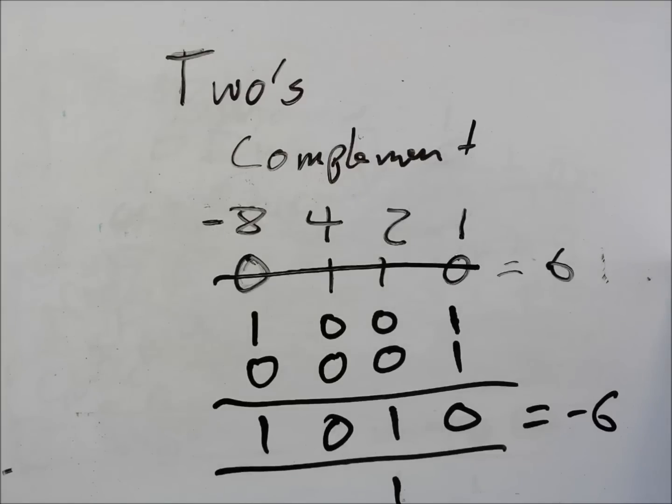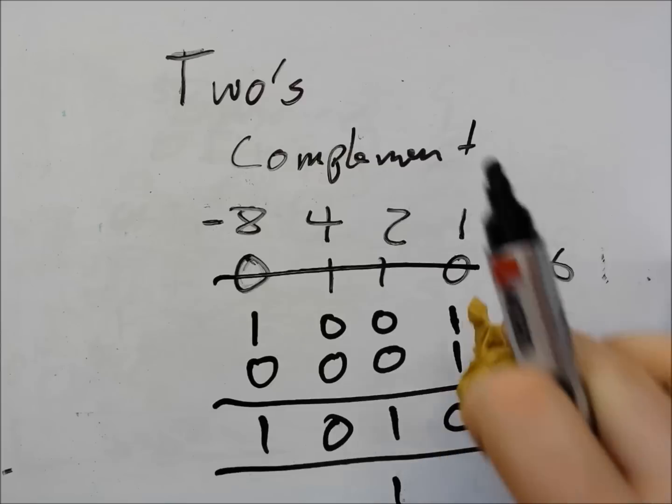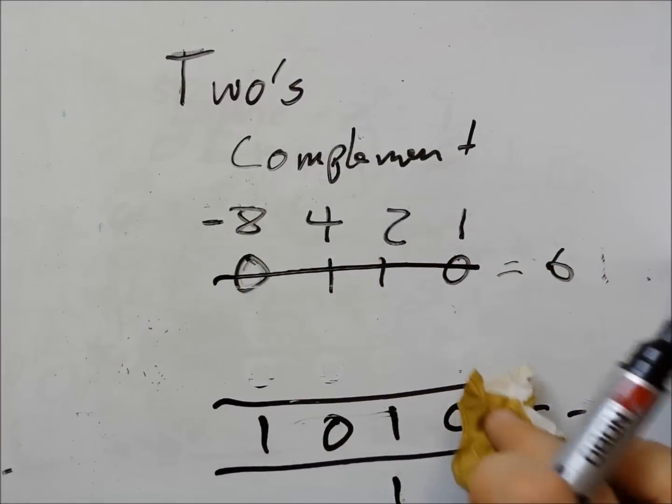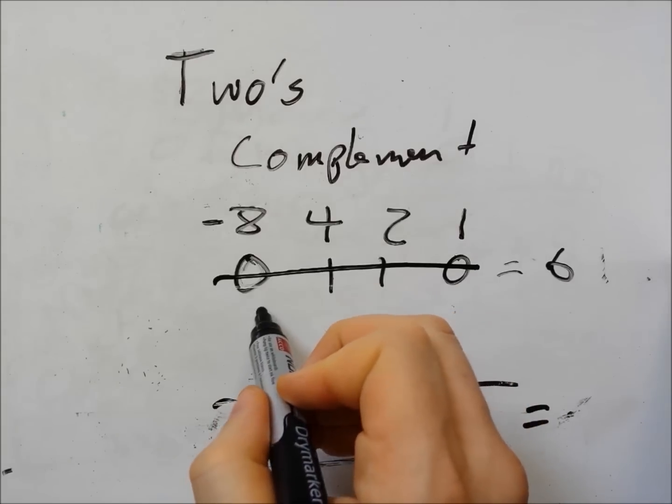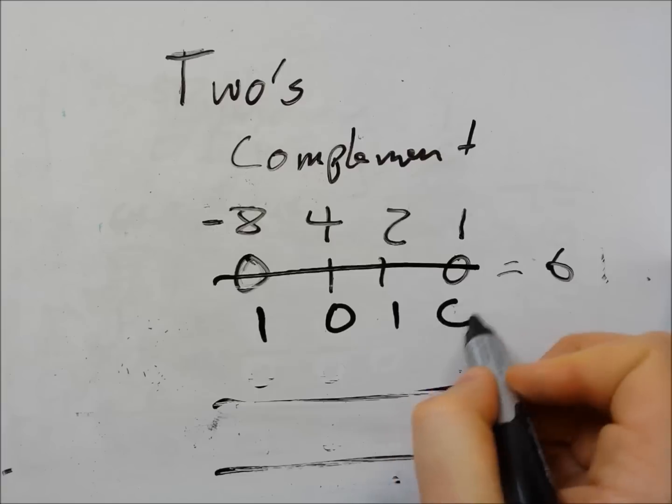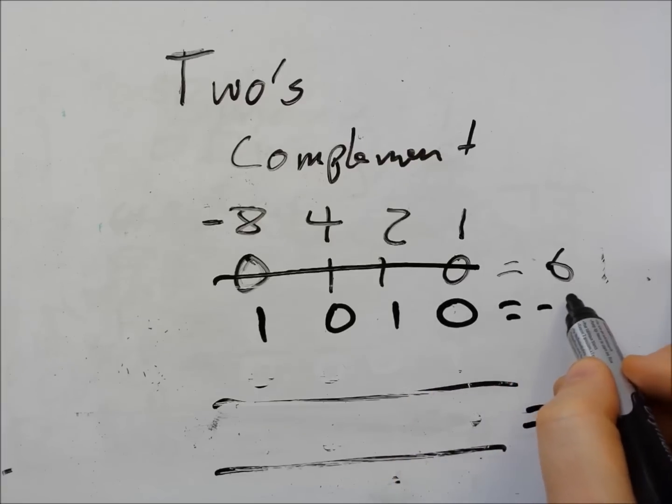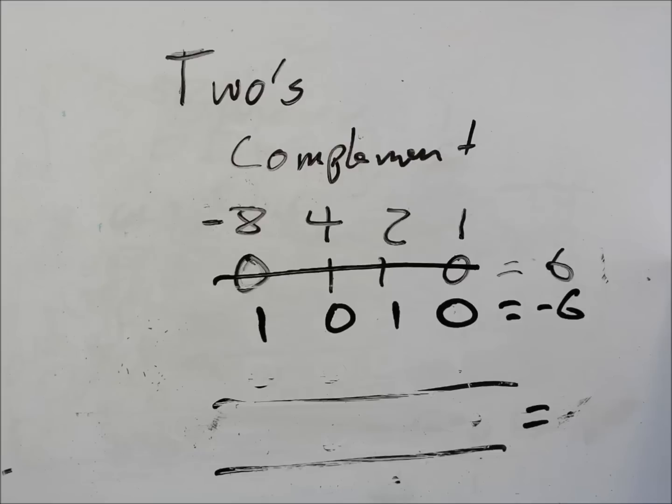We can go back again. So if I start at the top here with minus six. Minus six. So I'm going to go for minus six one zero one zero equals minus six. I'm going to flip all the digits.